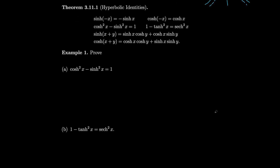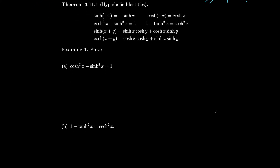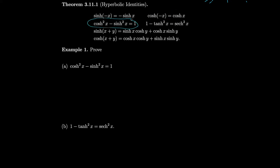So we have a number of identities. We know that sinh(−x) = −sinh(x). We know that cosh(−x) = cosh(x). We're about to prove the identity cosh² − sinh² = 1, and then we'll prove another identity, and there are also some area identities that you could prove yourselves.